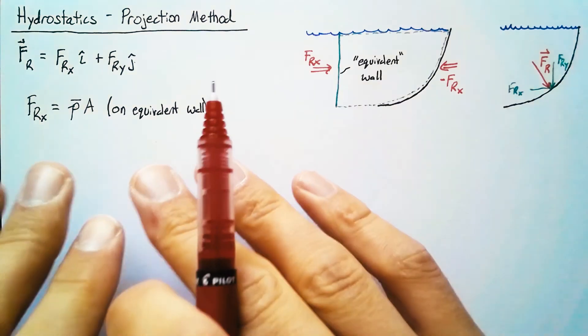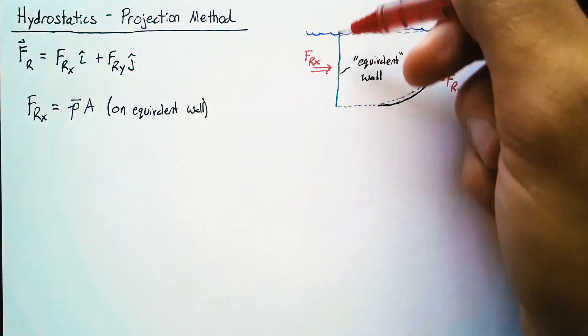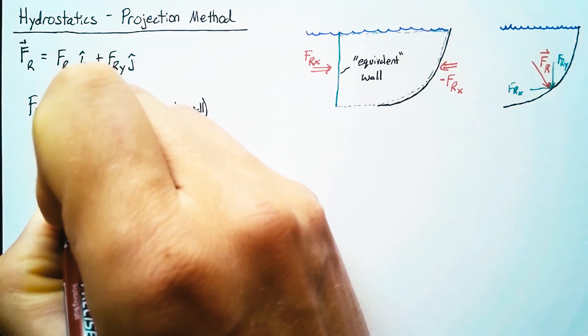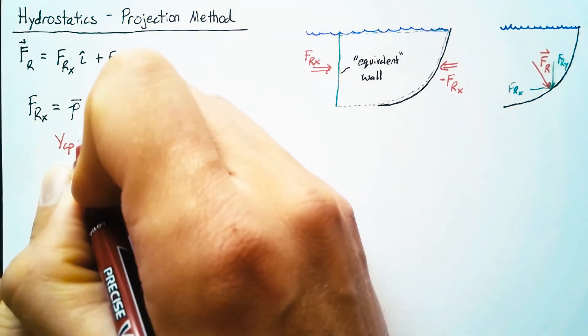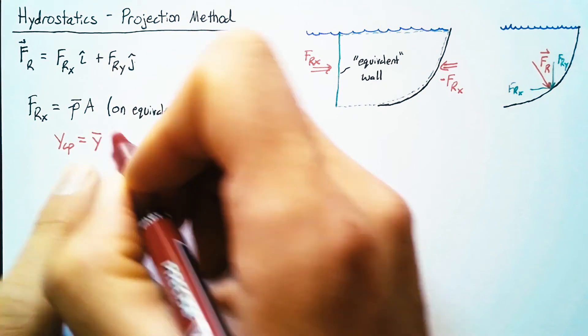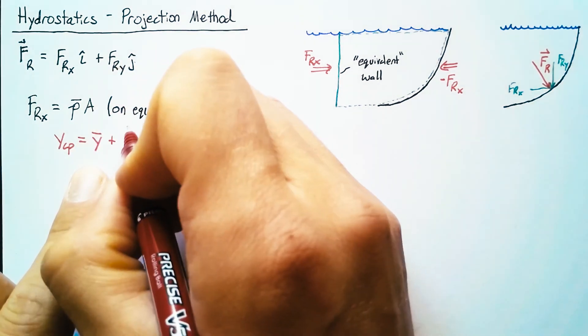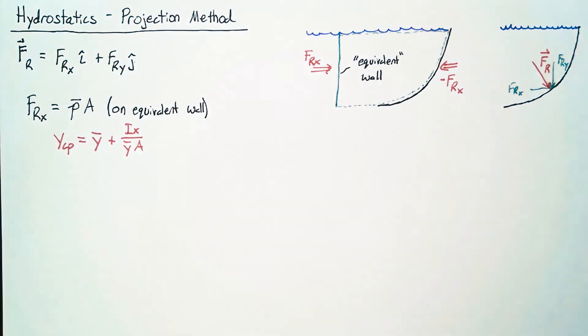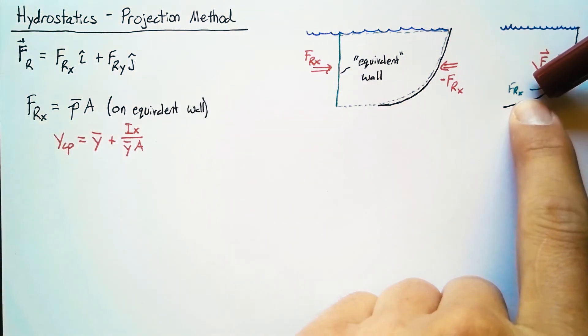We can use the formula method again to figure out where that force should actually be located. We know that the center of pressure is going to be the centroid plus the moment of inertia divided by y bar a. So that takes care of our x component.